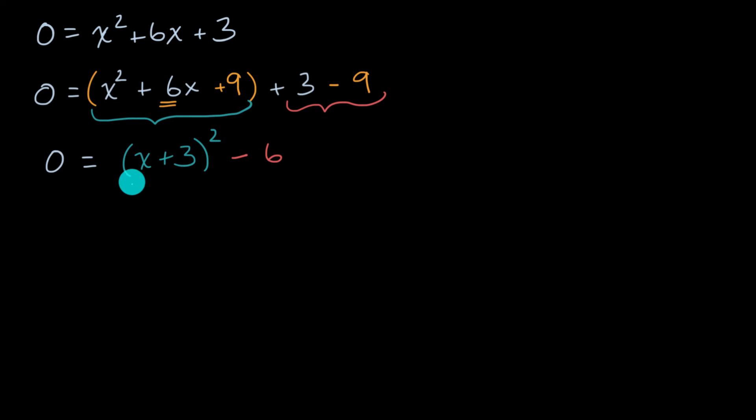And now what we can do is isolate this x plus three squared by adding six to both sides. So let's do that. Let's add six there. And what we get on the left-hand side, we get six is equal to, on the right-hand side, we just get x plus three squared.